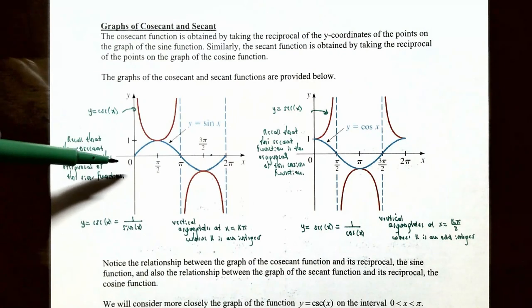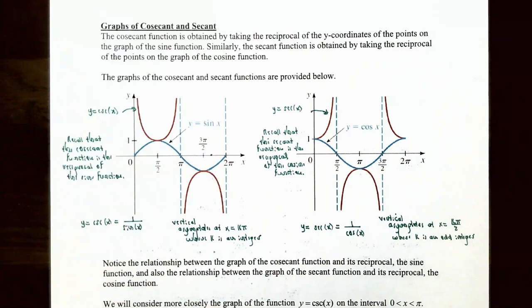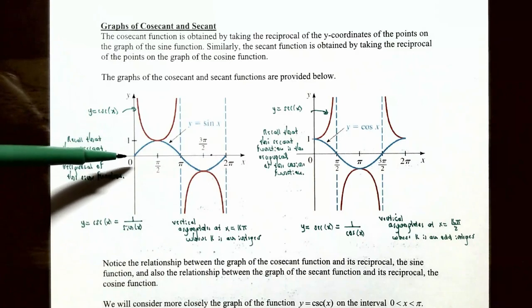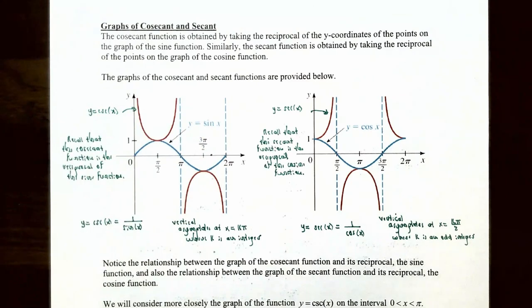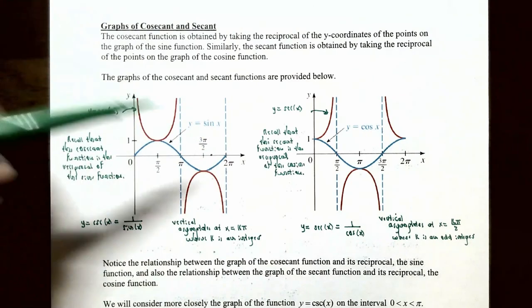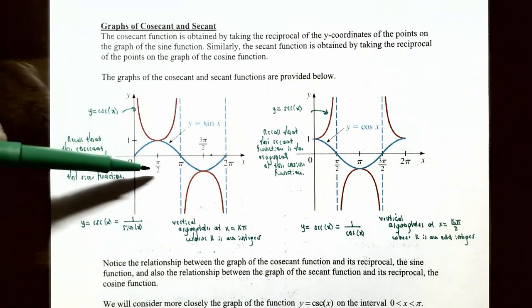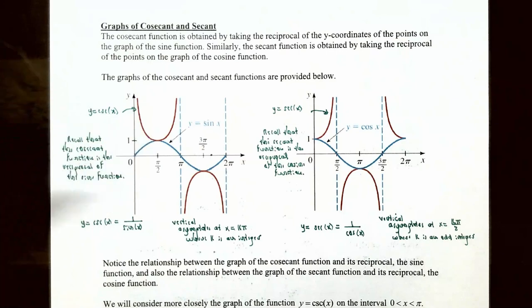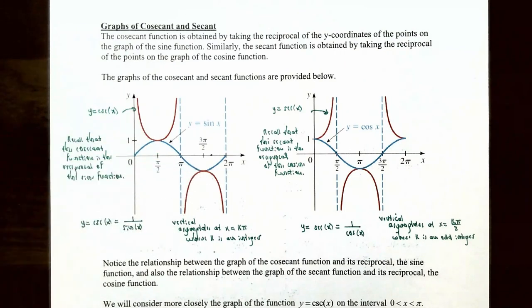Let's start with the sine function y equals sine of x, which is the graph in blue. The sine function starts at (0, 0) and completes one complete period at 2π radians, so you have (2π, 0) as well. At x equals π/2, sine is equal to 1 because sine of π/2 is equal to 1, and also at 3π/2, sine of 3π/2 is equal to negative 1.